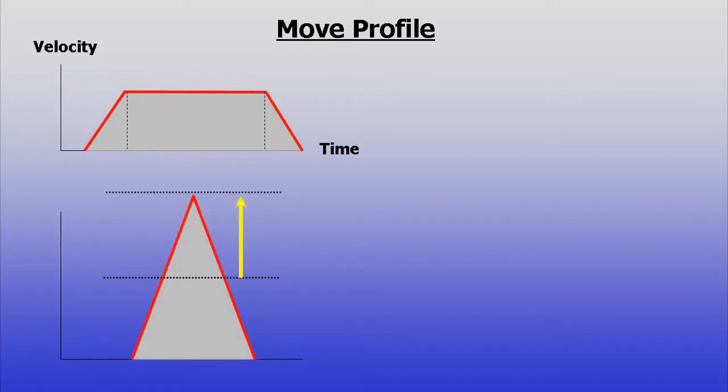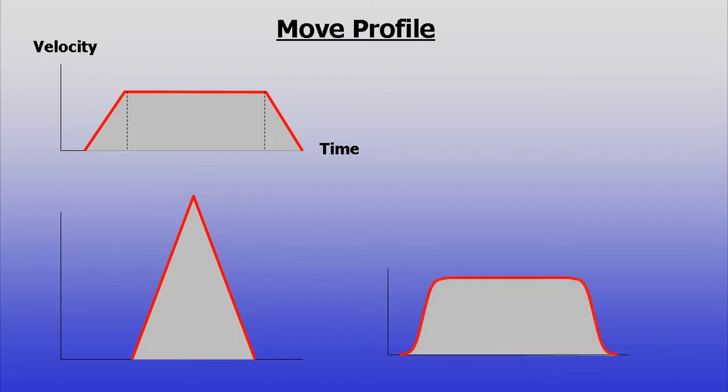Triangular moves require lower acceleration, but as a trade-off can require higher maximum speeds. S-curve moves have smooth transitions. This gives the load a less jerky ride, but can require higher accelerations.